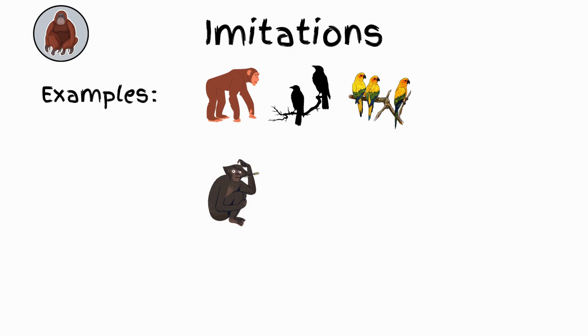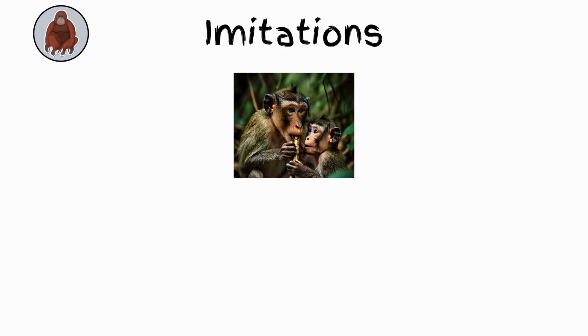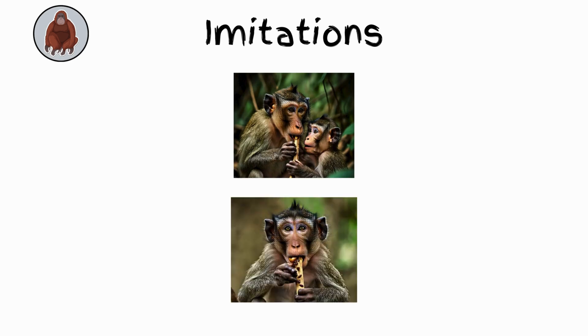Imitation. Examples: apes, crows, parrots. These animals observe and copy the actions of others to learn new skills. For example, a young monkey might watch its mother use a stick to get termites and then try for itself. Imitation is key for learning and helps them acquire skills necessary for survival and social life.